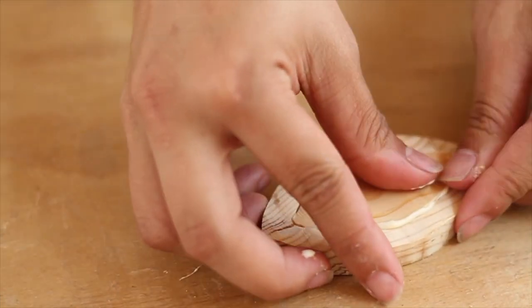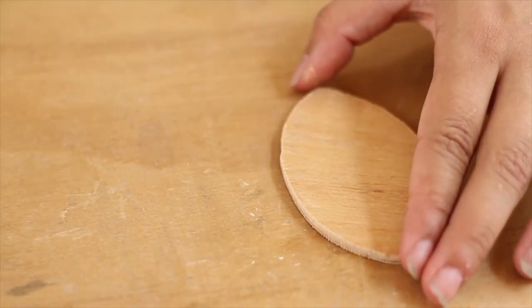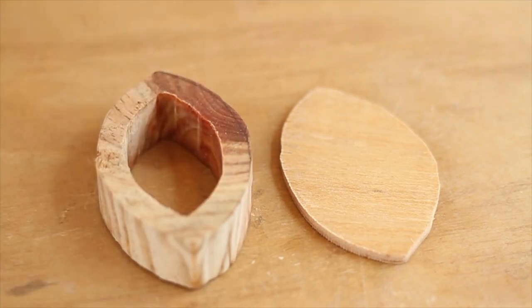Glue the 2 parts of the lid as well as the 2 parts that conform the body. Then a little polishing to make it all part of one same piece.